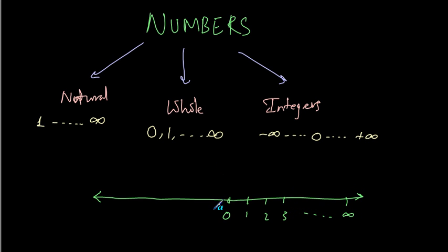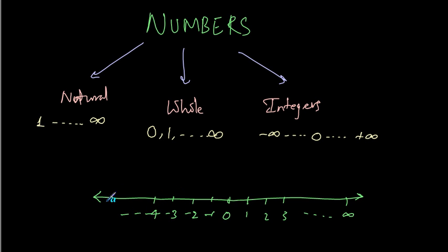On the left hand side are negative numbers. So, on the left hand side: minus 1, minus 2, minus 3, minus 4 and so on till negative infinity.